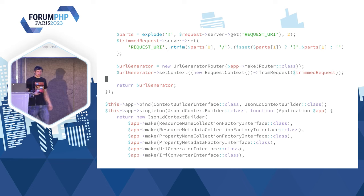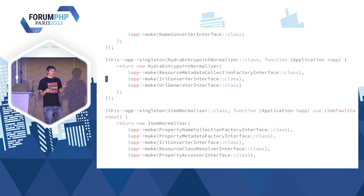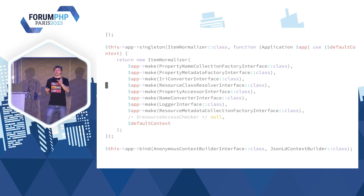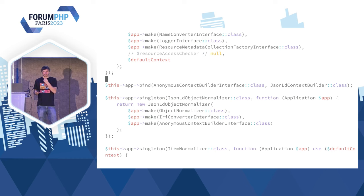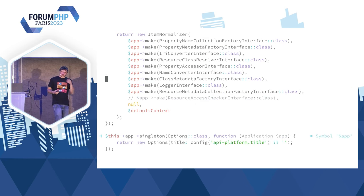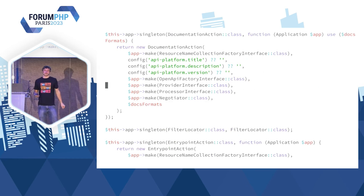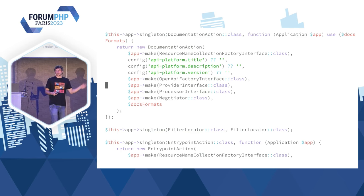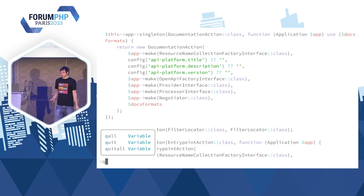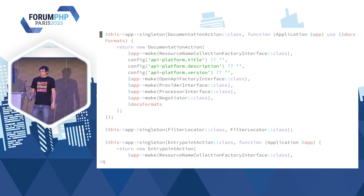Vous avez ici la déclaration de tous les services qu'API Platform a besoin pour fonctionner avec la plupart de ses fonctionnalités. On voit que j'ai utilisé principalement `singleton`, `bind` et `make`. On voit aussi d'autres petites choses : il y a des tags, donc la possibilité de taguer des services. Et on peut utiliser `config` — j'ai utilisé `config` pour récupérer le titre, la description, la version de votre API. J'ai trouvé ça bien pratique.